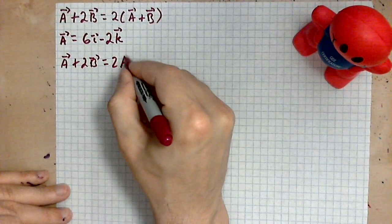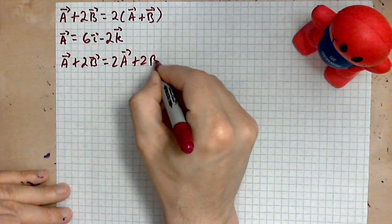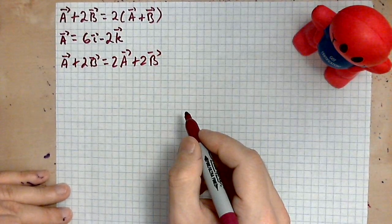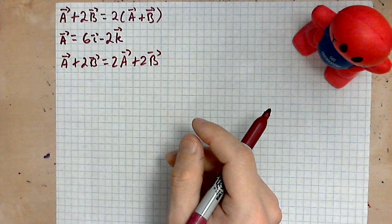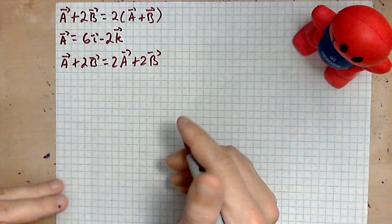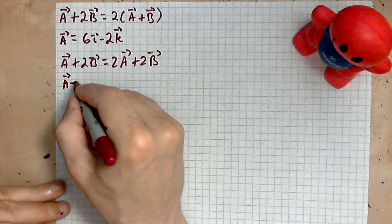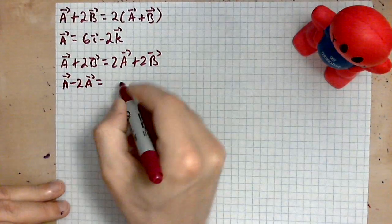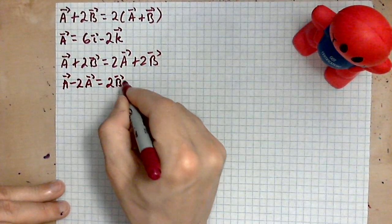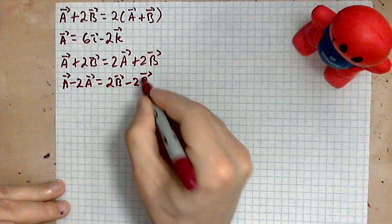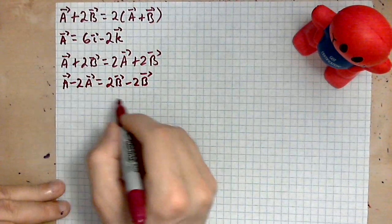Distribute the two, so you have 2a plus 2b. Once you've done that, immediately you can make an observation. The observation is this: a minus 2a equals 2b minus 2b.